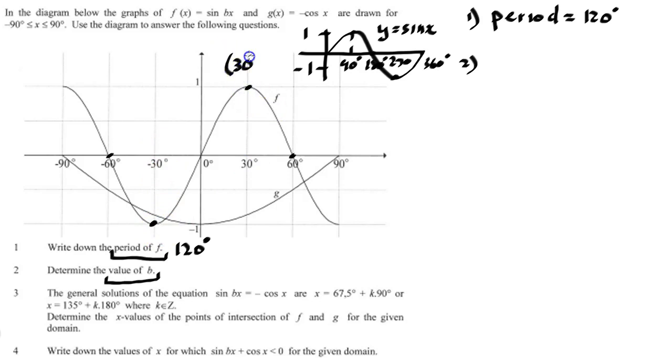Let's use this turning point to substitute into my equation. Remember that f(x) = sin bx can be written as y = sin bx. So let's substitute the point that we found on the graph. Let's substitute 30 degrees and 1. That's x, that's y.